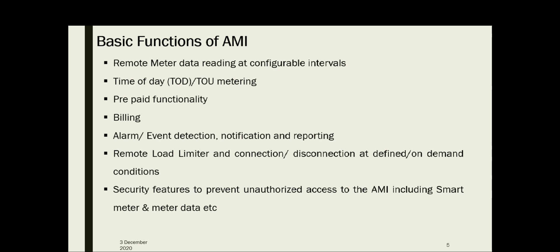The basic functions of AMI include remote meter data reading at configurable intervals — either an hour, half an hour, or 5 minutes. Then time-of-day or time-of-use metering. We discussed time-of-use tariffs and dynamic pricing, which require continuous measurement of energy usage so that different tariffs can be applied for different time periods.